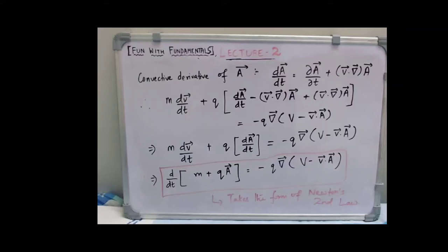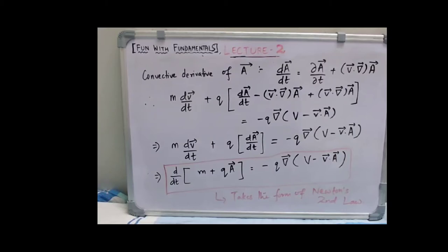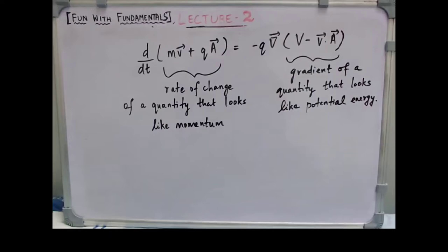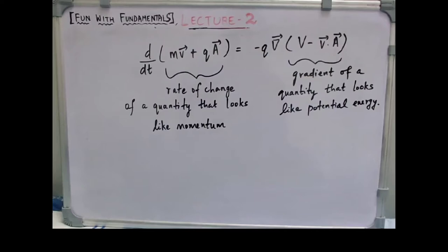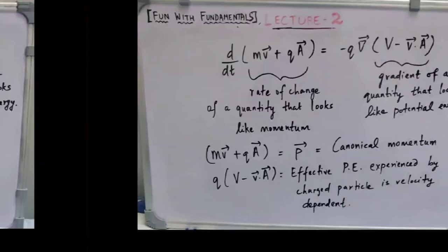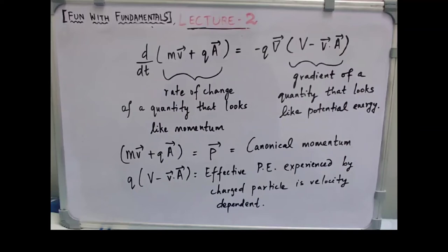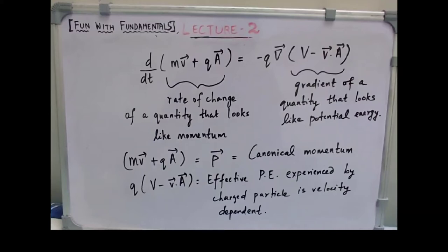So one gets d/dt of (m plus q times A) equals minus q gradient times (capital V minus V dot A). This equation takes the form of Newton's second law of motion: the left side represents the time derivative of a quantity that looks like momentum, and the right side denotes the gradient of a quantity that looks like potential energy. The term mv plus qA is given by p, which is the canonical momentum, and q times (capital V minus V dot A) is the effective potential energy experienced by the charged particle — now velocity dependent.